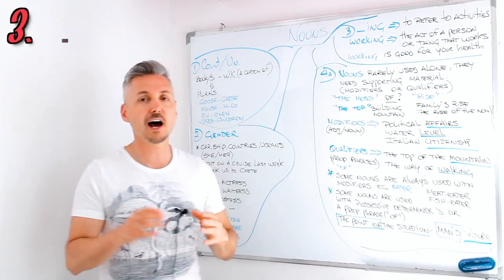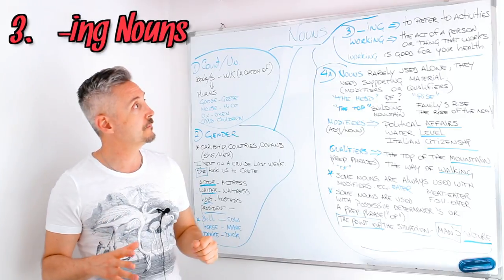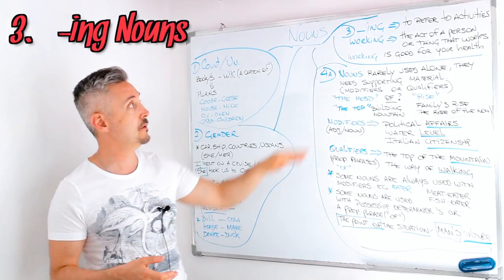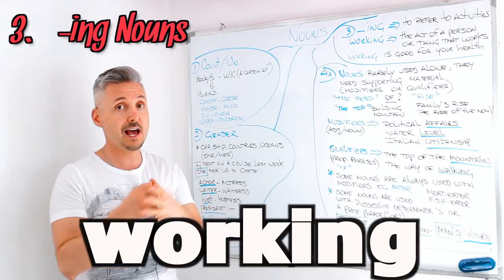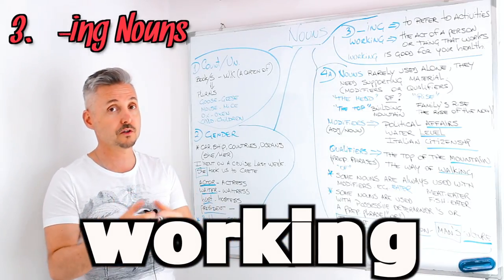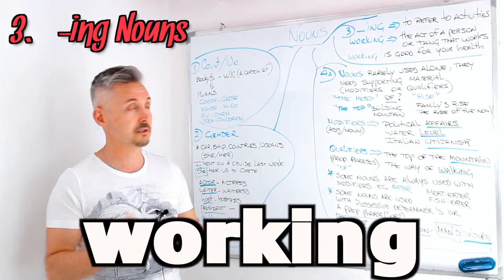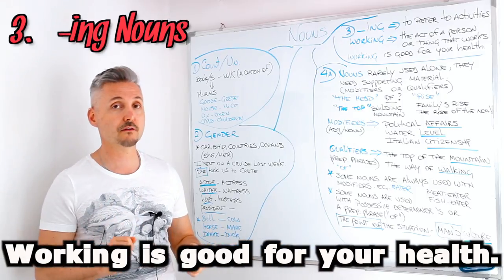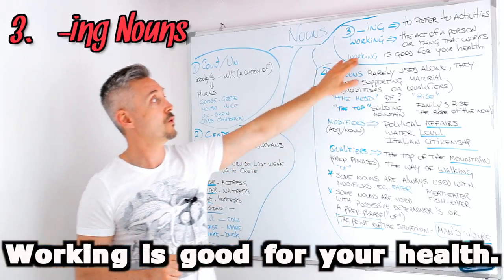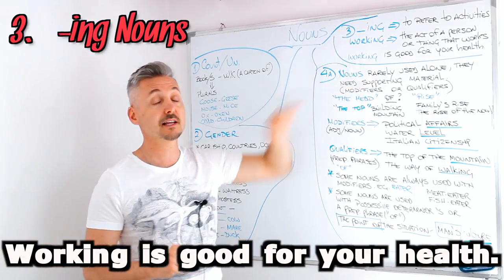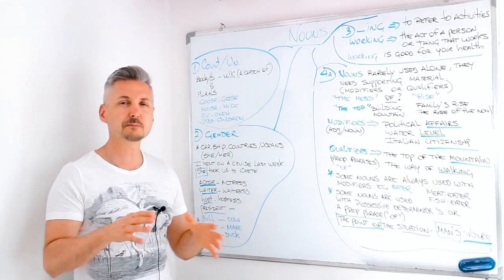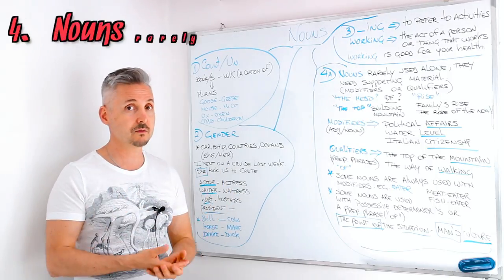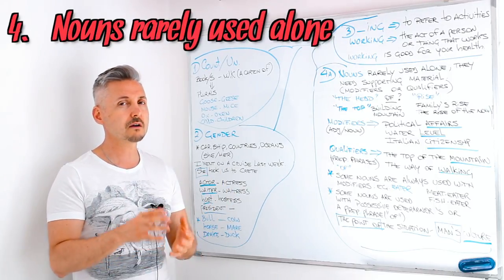Nouns with -ing refer to activities. For example, 'working' is the act of a person or thing that works. 'Working is good for your health.' 'Working' is the noun right there.